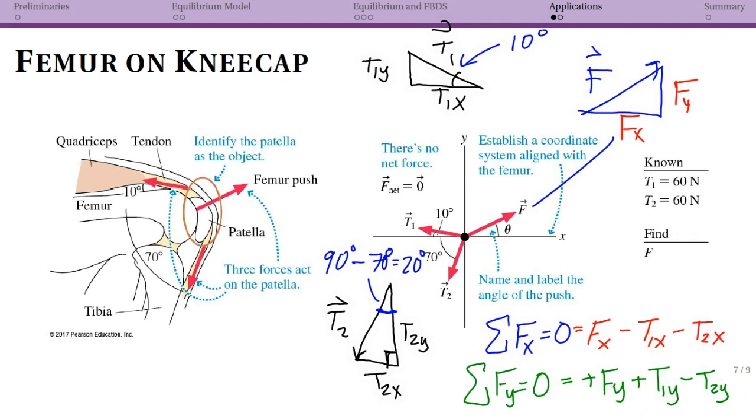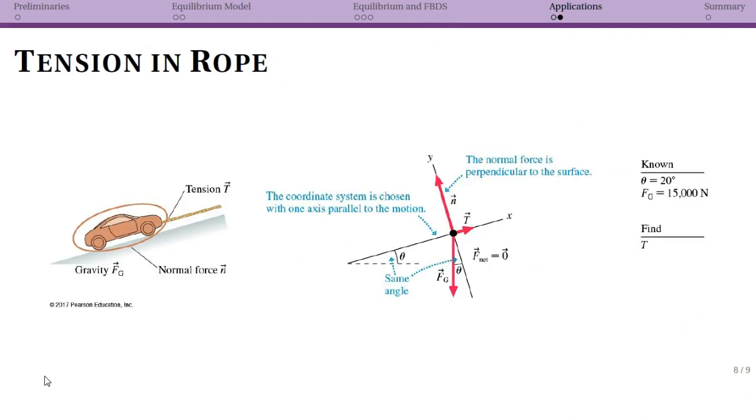So this is another example problem done out in detail in the book that I want to briefly talk about. In this case, you have a car that is being pulled uphill, and it's being pulled uphill at a constant speed. Why does the constant speed matter? Well, we have F net equals zero. Constant speed means your change in velocity vector equals zero, which means that we have an equilibrium problem. If the car was accelerating, then we wouldn't have an equilibrium problem and we can't say F net equals zero.